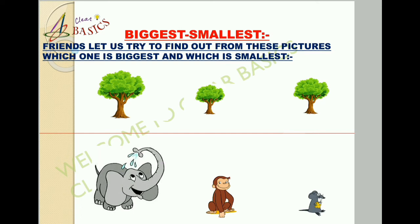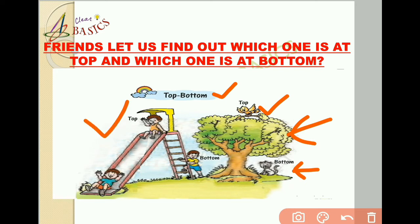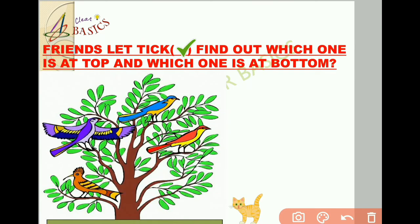Now friends, let us move on to our next topic: Top and Bottom. Friends, look at the tree. There is a bird and a cat. The bird is sitting on the top of a branch of the tree, but the cat is sitting at the bottom of the tree. Now let us come to this picture — there are three children playing in the park. This child is at the top of the slide, and this child is at the bottom of the slide.